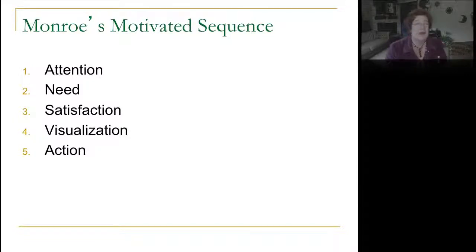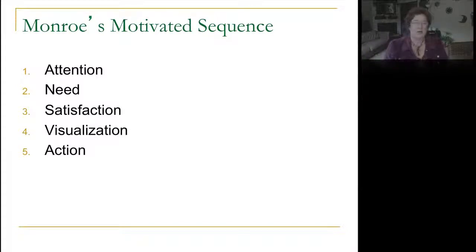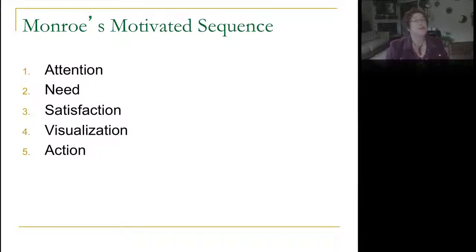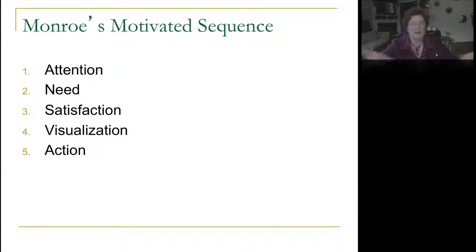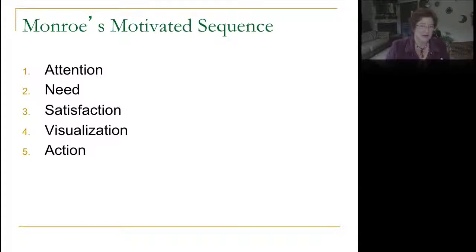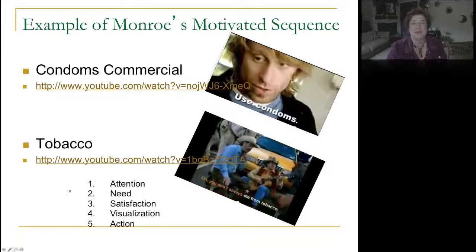People who make commercials are very good at knowing Monroe's Motivated Sequence. Imagine an Axe deodorant commercial: it gets your attention — the guy smells his underarm in the elevator and the girl reacts negatively. Then they show you the product. Then visualization — now that he uses Axe, the girl jumps into his arms. And at the end, implied or stated: go buy this deodorant. That's a 30-second commercial that uses Monroe's Motivated Sequence.